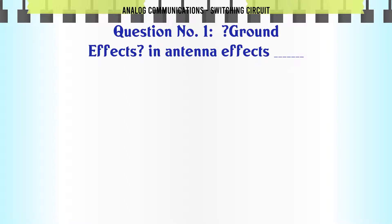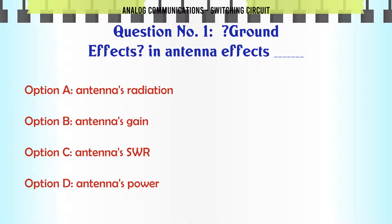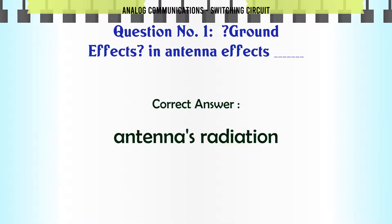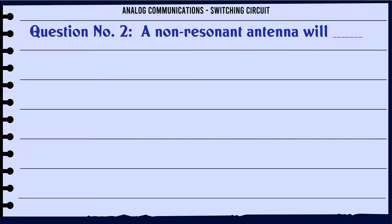Question: Ground Effects in Antenna Effects. Option A: Antenna's Radiation. Option B: Antenna's Gain. Option C: Antenna's SWR. Option D: Antenna's Power. The correct answer is Antenna's Radiation.